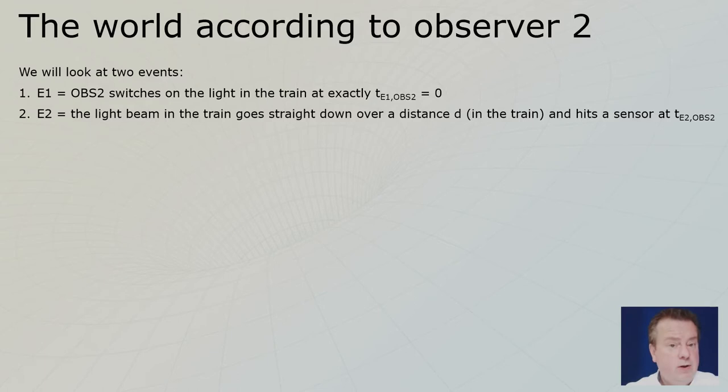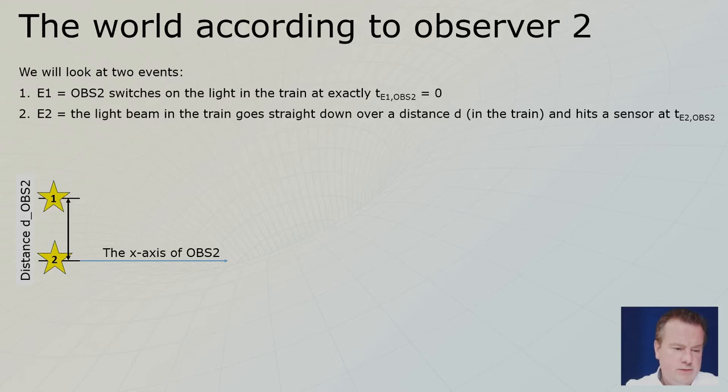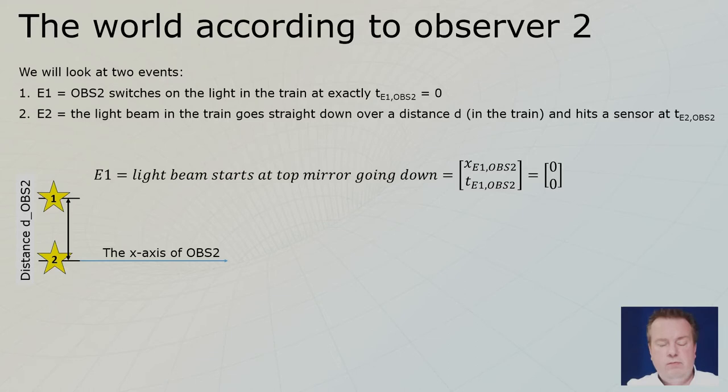Event number two is the light hitting the bottom sensor, which is a distance D away. This will happen at another time, sometime later, and she will write down this time as the time of event two through the eyes of observer two. In the graphics, we see distance D through the eyes of observer two between the ceiling and the bottom. At event one she writes down: x-coordinate is zero, time is zero, because at t equals zero, x was also set to zero.